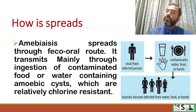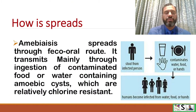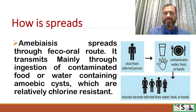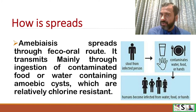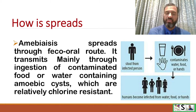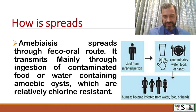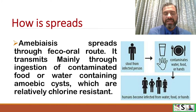How does it spread? Amoebiasis spreads through the feco-oral route. It transmits mainly through the ingestion of contaminated food and water which contains amoebic cysts, which are relatively chlorine resistant.